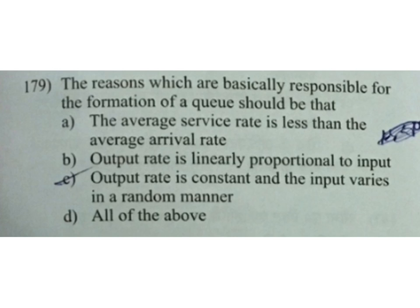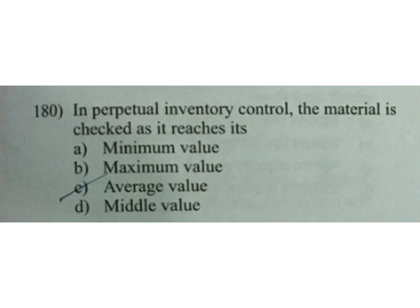In perpetual inventory control, the material is checked as it reaches its: A minimum value, B maximum value, C average value, D middle value. Minimum value is the answer. The performance of a specific task in CPM is known as: A dummy, B event, C activity, D contract. C is the answer.